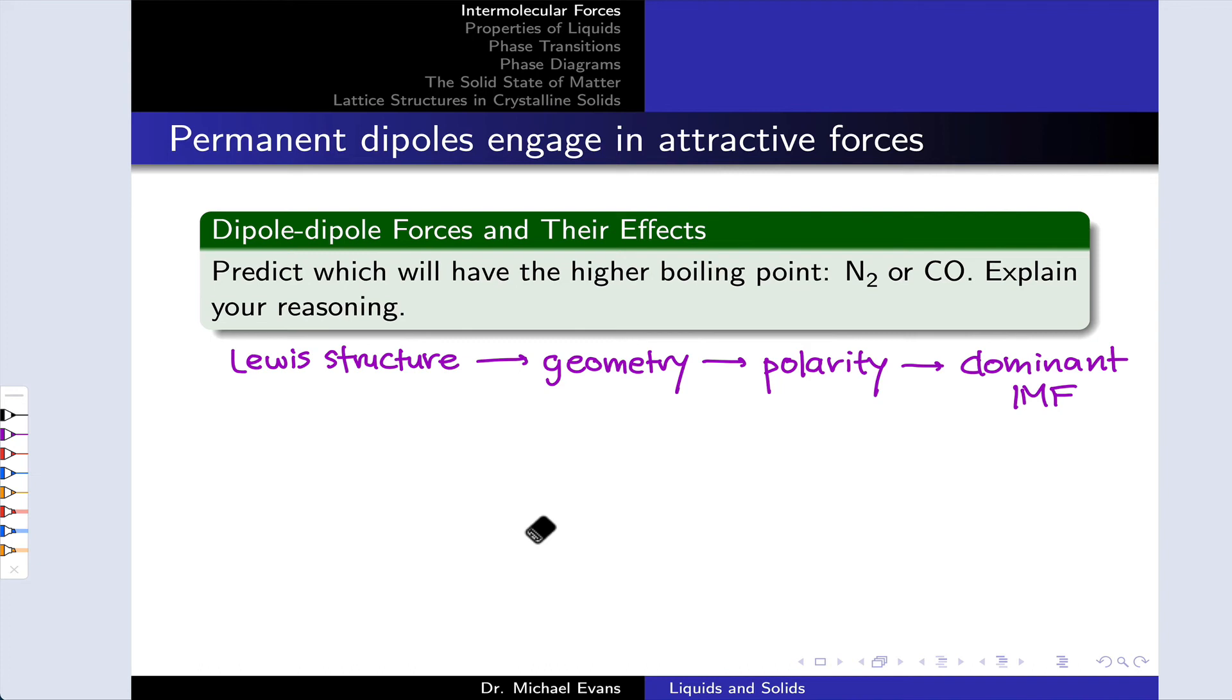So here, we've got two molecules, N2 and CO, that we're interested in, and we start with their Lewis structures. So here are Lewis structures for N2 and CO. I encourage you to draw these out on your own and make sure you're comfortable with the formal charges, the locations of electrons, all that good stuff.